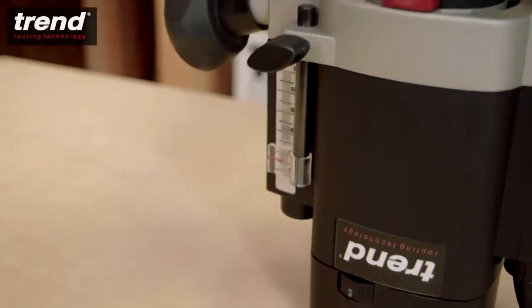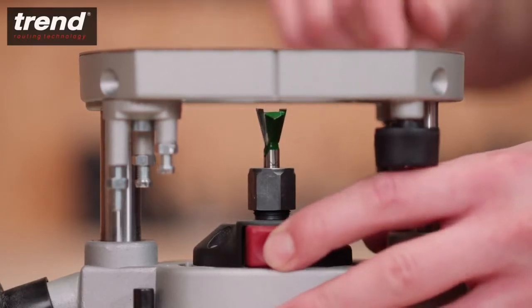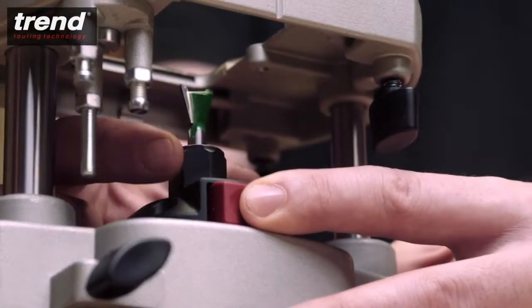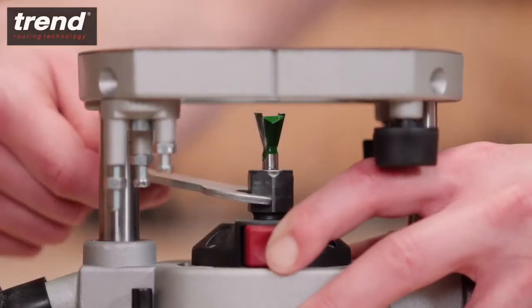First, insert a quarter inch shank router cutter into the collet. Make sure it's inserted up to the marked line. The spindle lock button stops the spindle from moving while tightening the collet nut with the spanner provided.